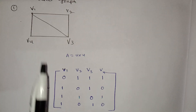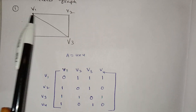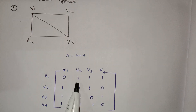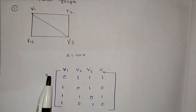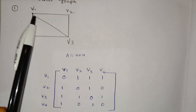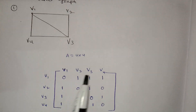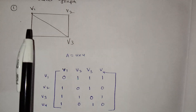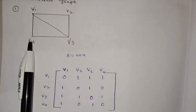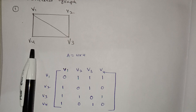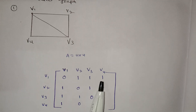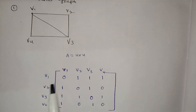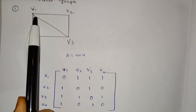For V1-V2: there is an edge, so we write 1. For V1-V3: there is an edge, so we write 1. For V1-V4: there is an edge, so we write 1.